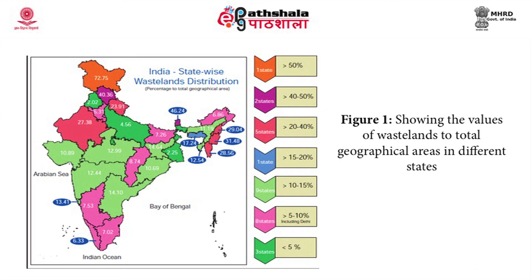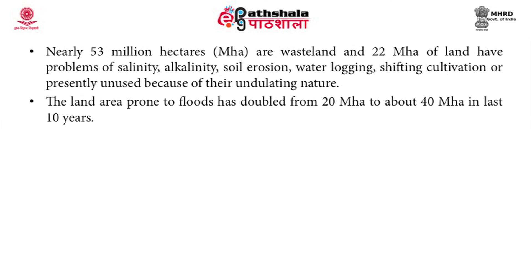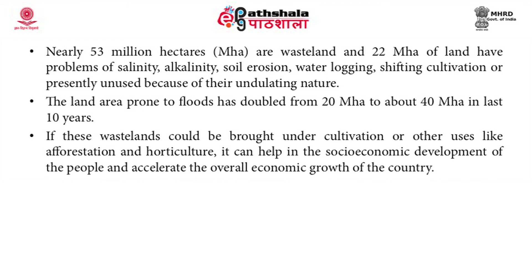Two states have percentage between 40 to 50%, five between 20 to 40%, one state has wasteland area greater than 15 to 20%, and subsequently we can see states with more than 10 to 15%, 5 to 10% and less than 5%. Nearly 53 million hectares are wasteland and 22 million hectares of land have problems of salinity, alkalinity, soil erosion, water logging, shifting cultivation or are presently unused because of their undulating nature. The land area prone to floods has doubled from 20 mega hectares to about 40 mega hectares in the last 10 years. If these wastelands could be brought under cultivation or other uses like afforestation and horticulture, it can help in the socio-economic development of people and accelerate overall economic growth.